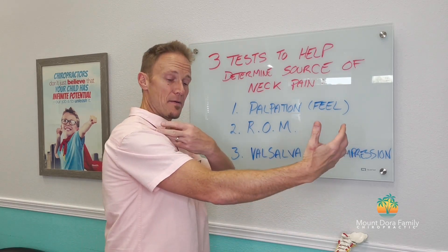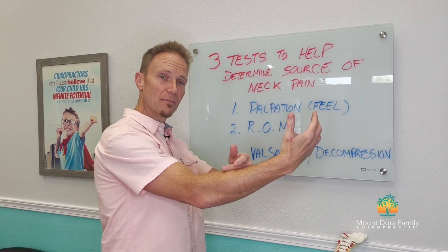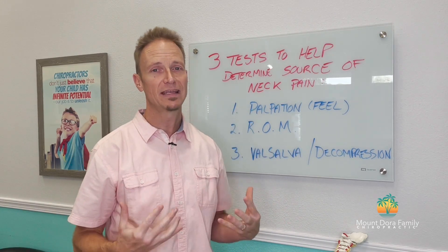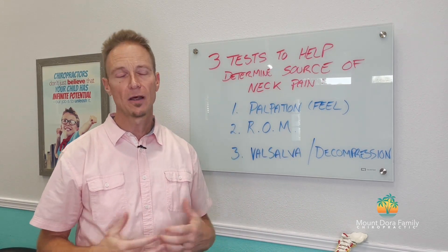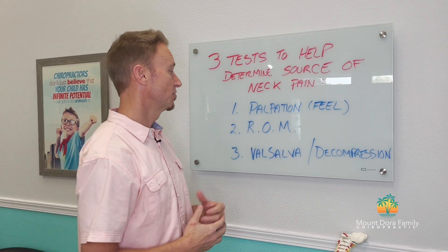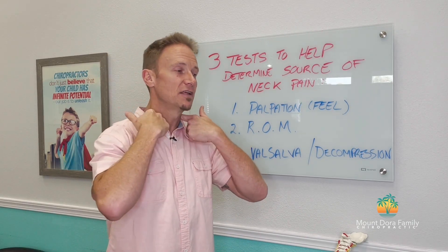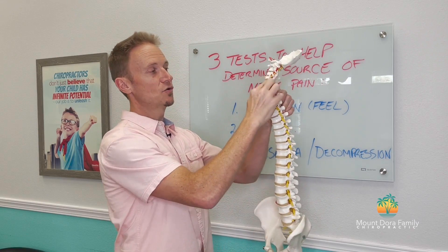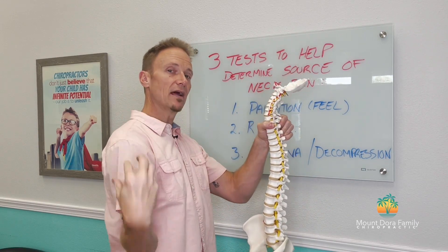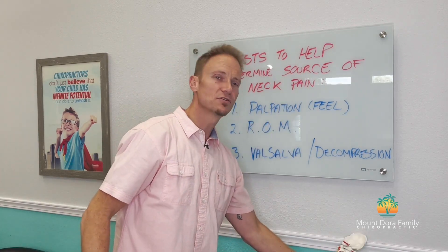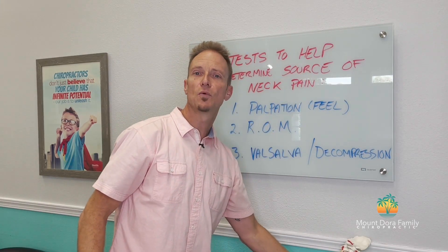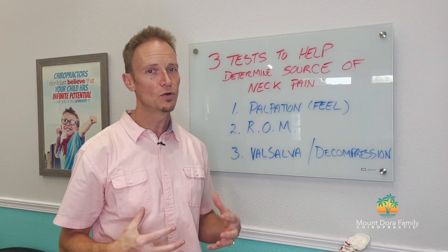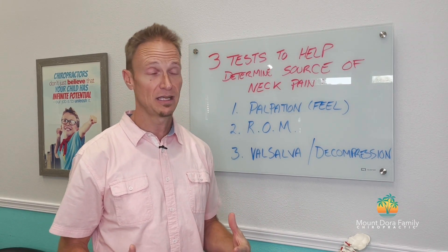If you're getting pain, numbness, or tingling down into your arms or fingers, that's called radiculopathy or a form of neuropathy. That might mean you've got nerve irritation as those nerves are exiting the joints and going down into your extremity. That's a more significant situation — usually things have been a bit more progressed — and they really need some professional attention.